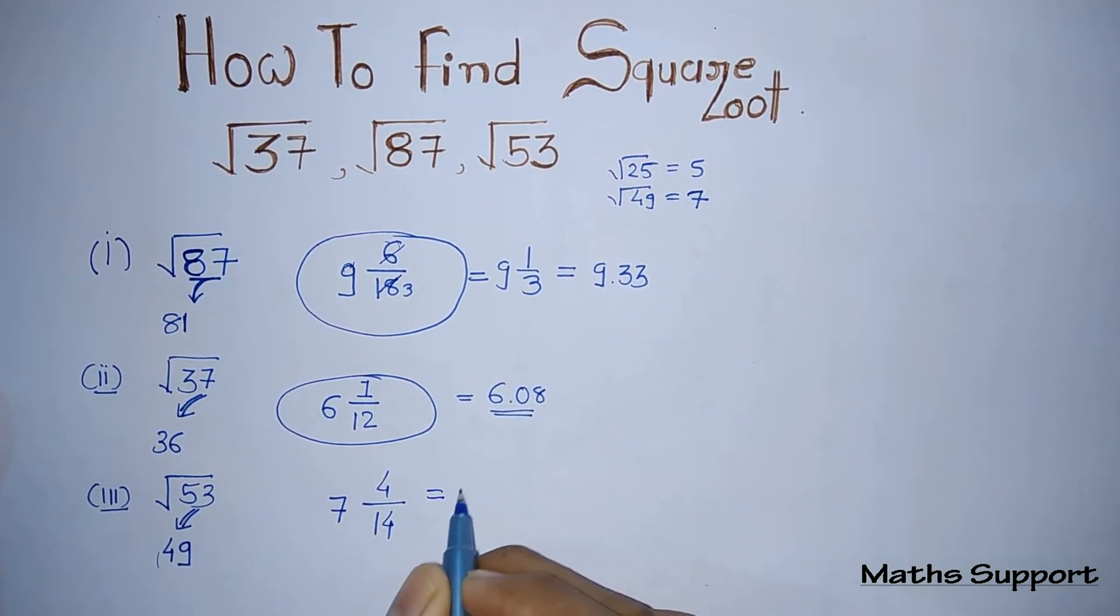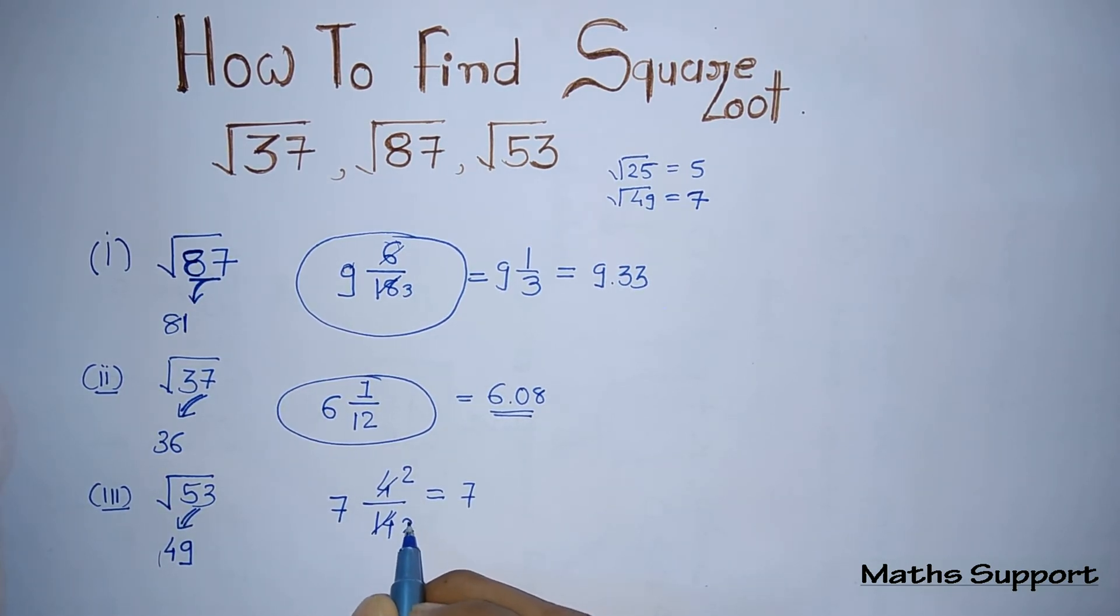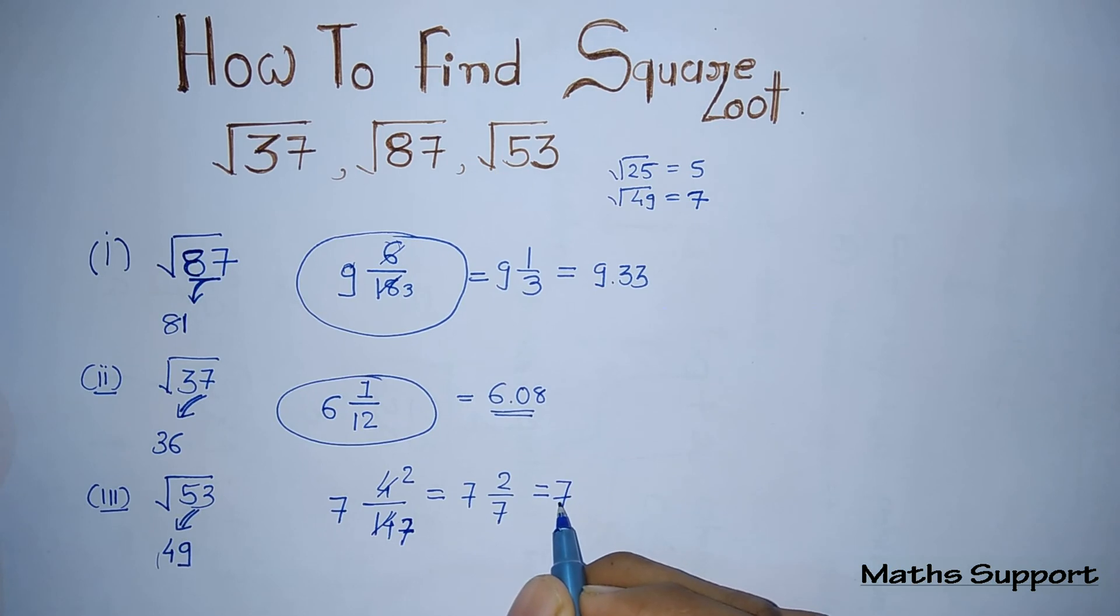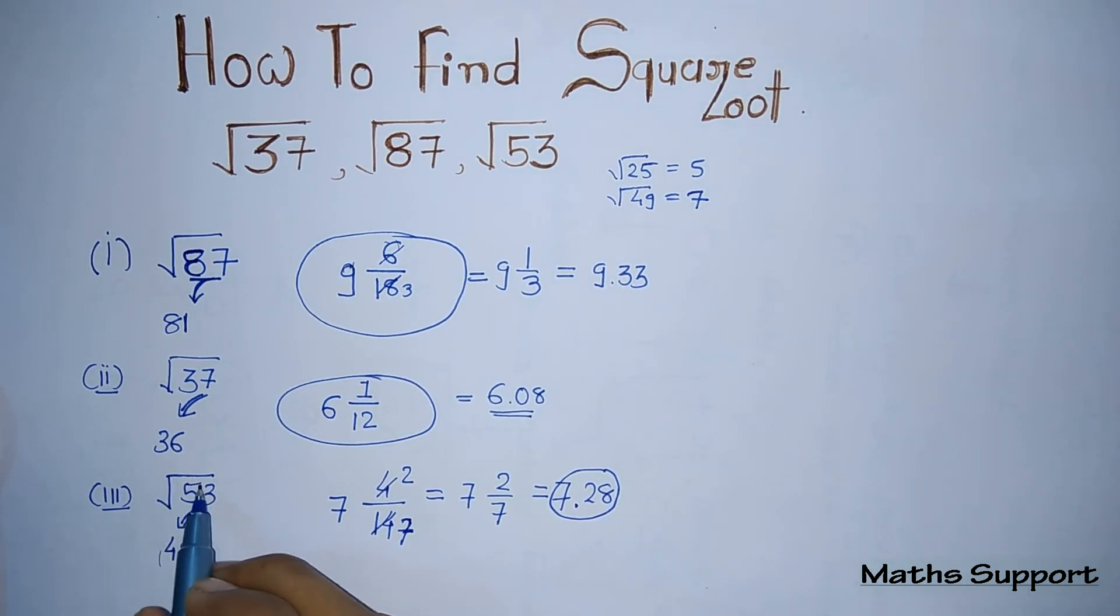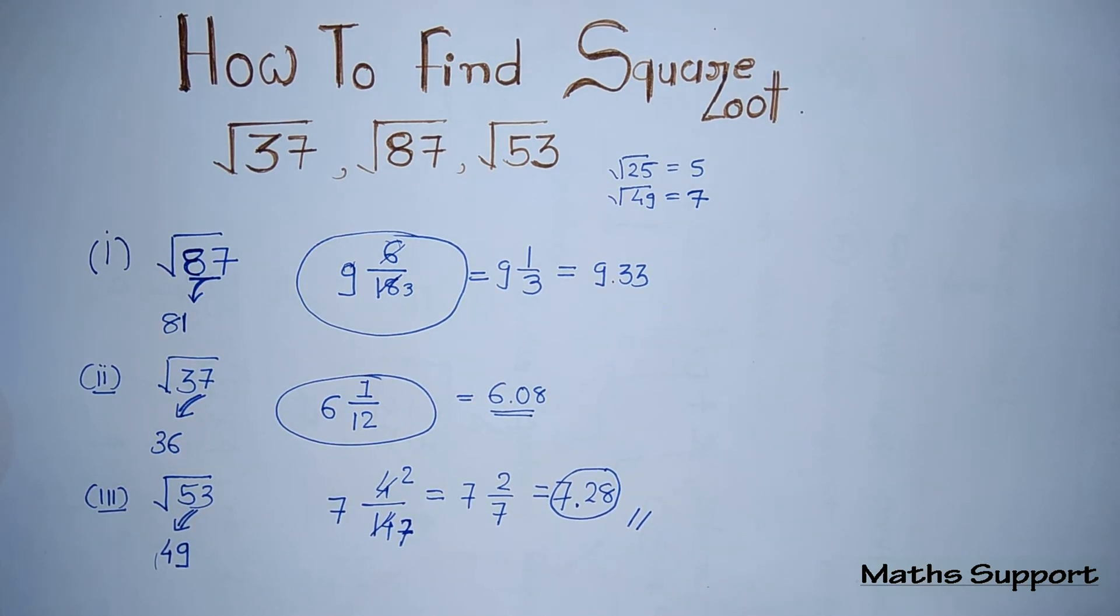If you are simplifying this value, 4 over 14 simplifies to 2 over 7. This is your final answer. If you want decimal form, convert this number: 2/7 is 0.28, so the answer is 7.28. Square root of 53 is 7.28. It's very simple. You can use this method without even using a calculator. That's all.